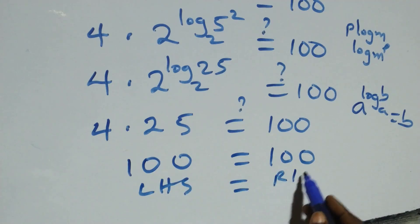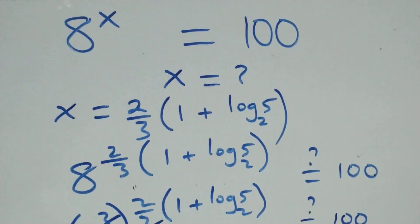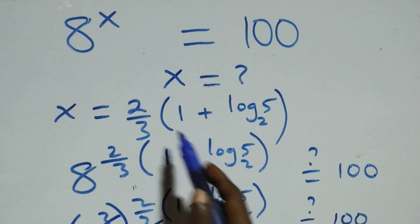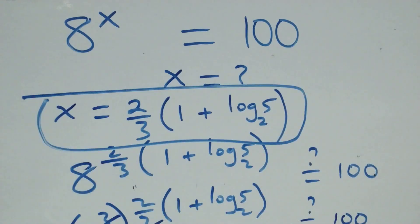The left hand side equals the right hand side, and hence we conclude that x equals 2 over 3 times (1 plus log₂ 5) satisfies this given problem. Thank you for watching — don't forget to subscribe for more videos, turn on the notification bell, share this video, give a thumbs up, and put your comments. See you next class, bye for now.